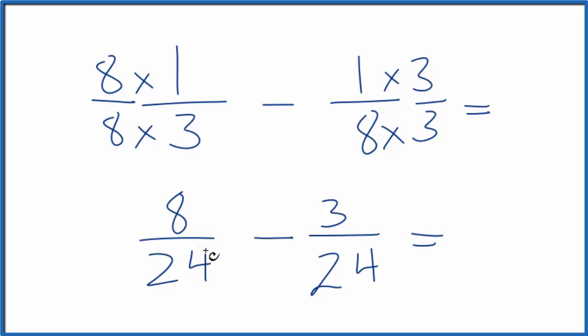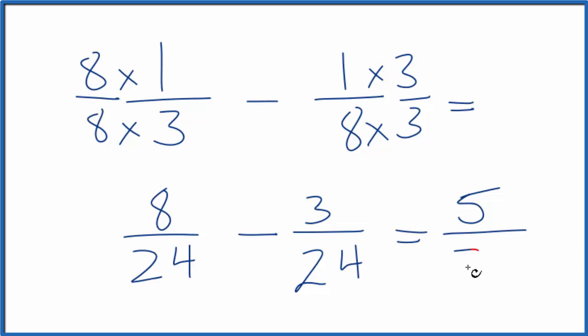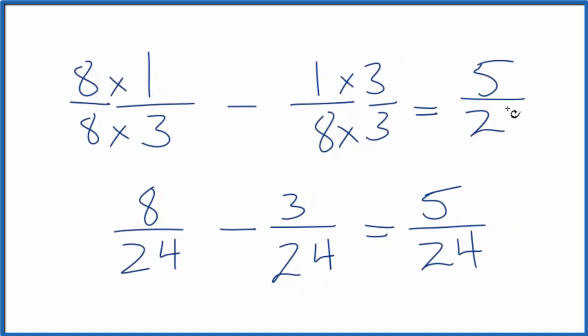So now we have the same denominator, we just take 8 minus 3, that gives us 5, bring the 24 across, and one-third minus one-eighth is 5 over 24.